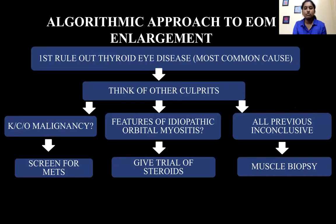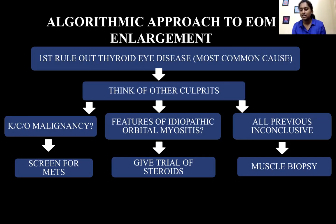The majority of cases involved the extraocular muscles. If we were to make an algorithm for extraocular muscle enlargement, first we rule out thyroid eye disease, which is the most common cause. If that is not the case, we look at the history — if it's a known case of malignancy, we screen for metastasis. If there are features of idiopathic orbital myositis, such as involvement of the tendinous insertions, we give a trial of steroids, as this condition responds very well to steroids. If none of these fit, the last step is muscle biopsy.